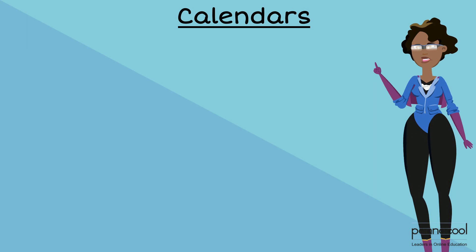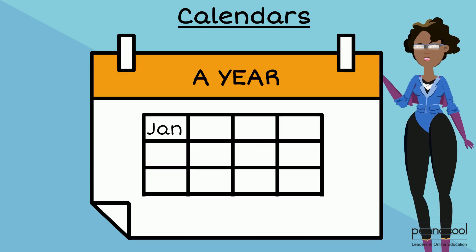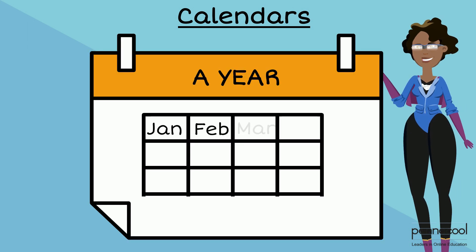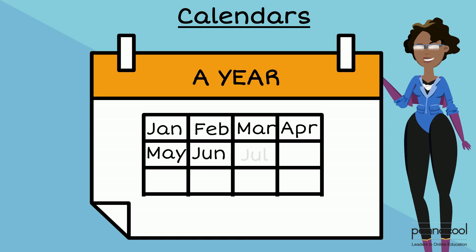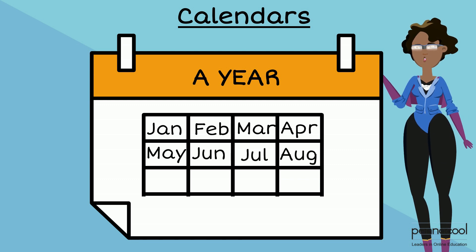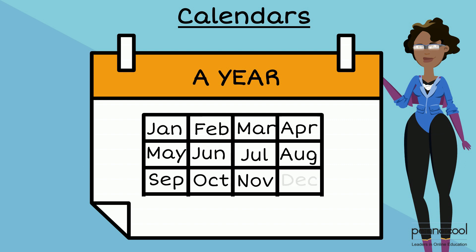There are 12 months in one year: January, February, March, April, May, June, July, August, September, October, November and December.